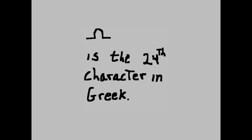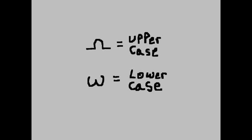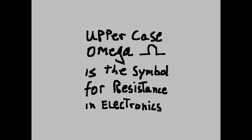Omega is the twenty-fourth character in Greek. Omega is the uppercase. That funny character is the uppercase. And what looks like a W is the lowercase of Omega. Uppercase Omega is the symbol for resistance in electronics.